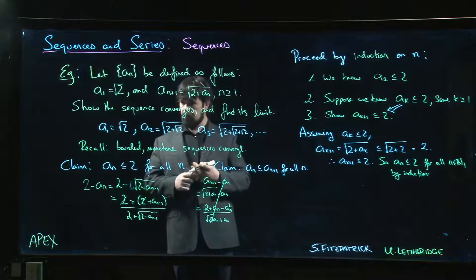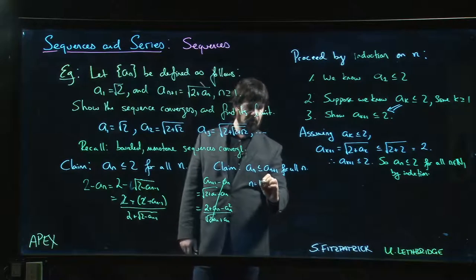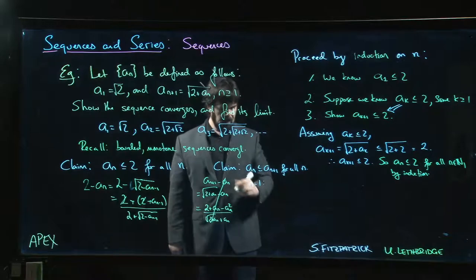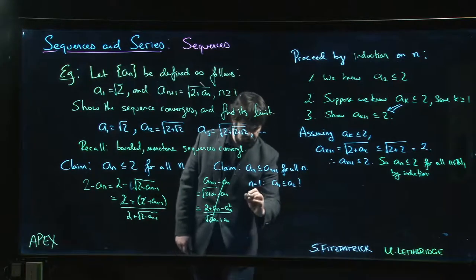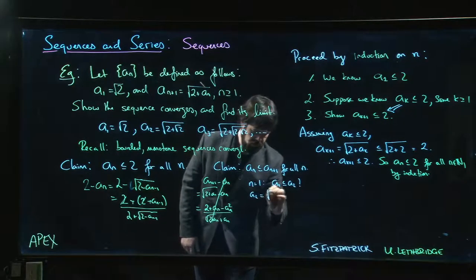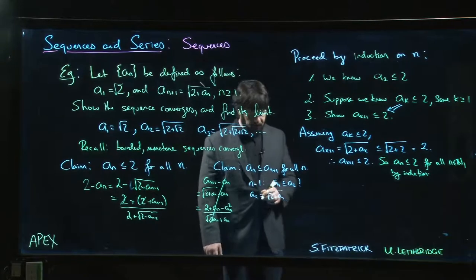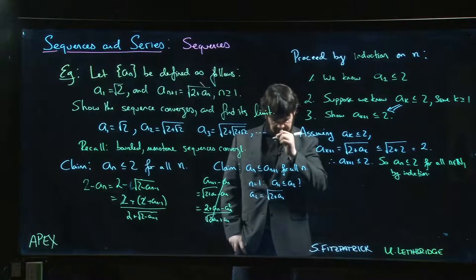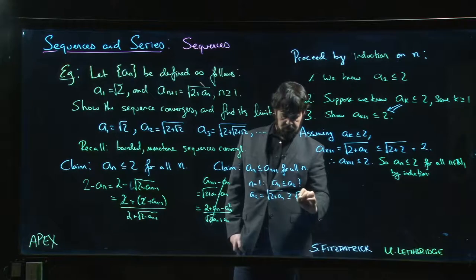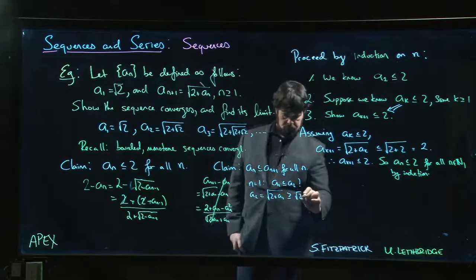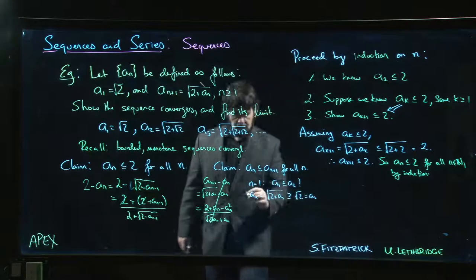Let's try induction again. The base case: is a_1 ≤ a_2? We know a_1 = root 2, and a_2 = root(2 + a_1). Since a_1 is certainly bigger than zero, root(2 + a_1) is bigger than root 2, which equals a_1. So yes, a_1 ≤ a_2.